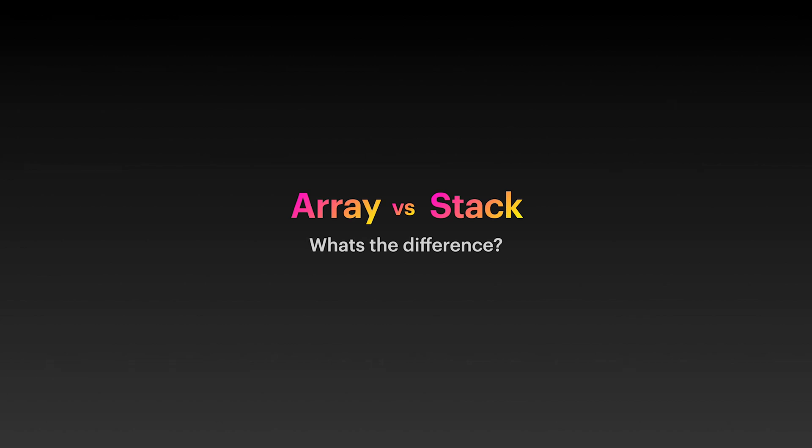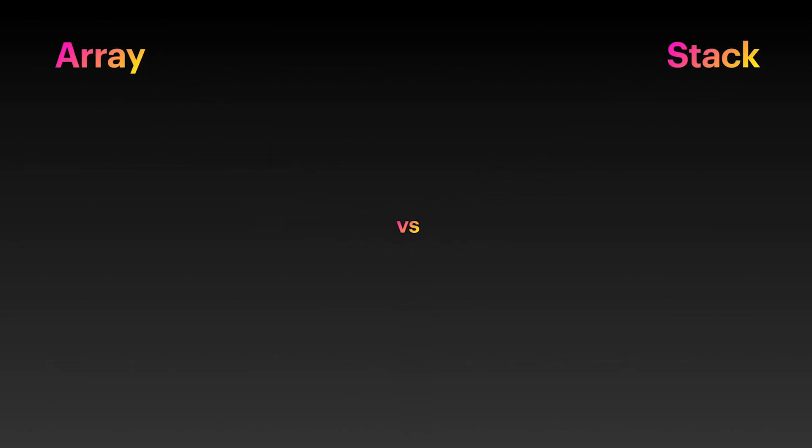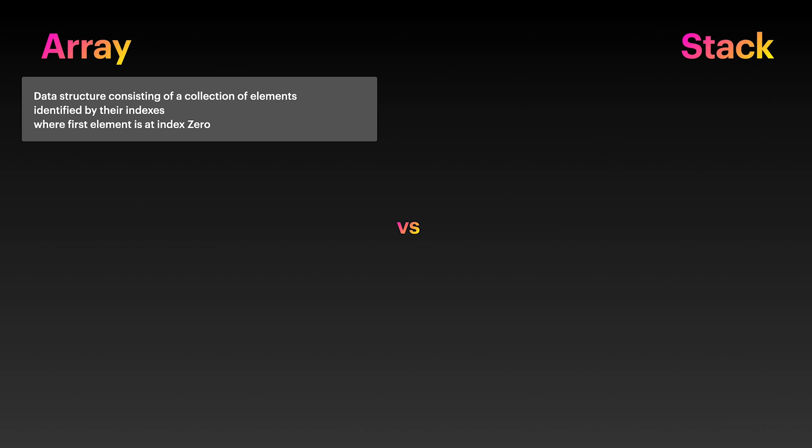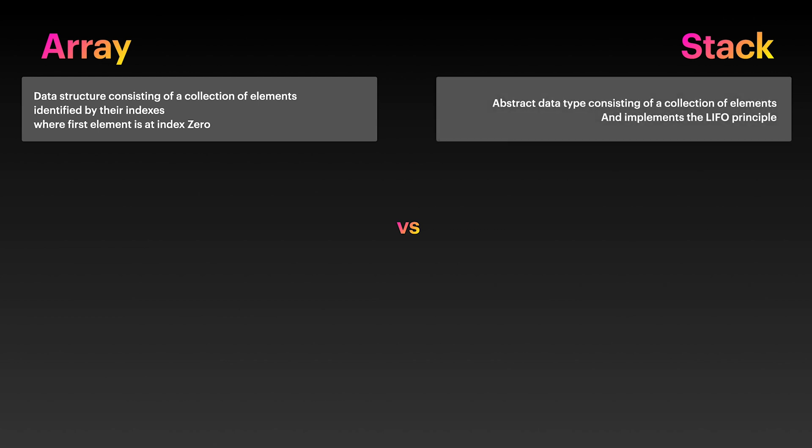Let's look at these two data structures. On one hand, we have the array data structure with a collection of elements identified by their indexes, where the first element is at index zero. On the other hand, we have the stack, which is a collection of elements with LIFO principle implementation.